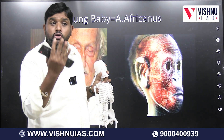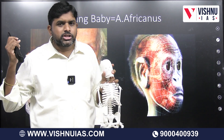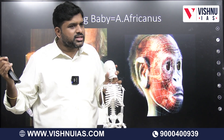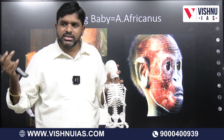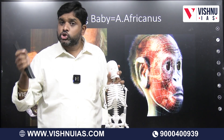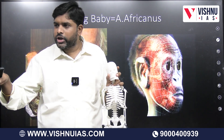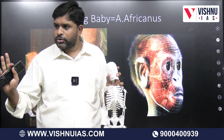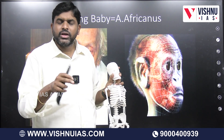In the Gracile variety, we have found four fossils. One is called Afarensis, the second is Anamensis, the third is Africanus, and the fourth is Ramidus. These names are given based upon their location.